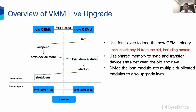This picture also shows the flow path of Live Upgrade, which is similar to Live Migration. First, load the new QEMU and do the initialization. When finished, notify the old QEMU to suspend the guest, which is the start point of the downtime. You need to pause the vCPUs and stop the devices, and then save and load the device state in parallel in the old and new QEMU. Finally, the new QEMU gets the full VM state and starts up — that is the end of the downtime.